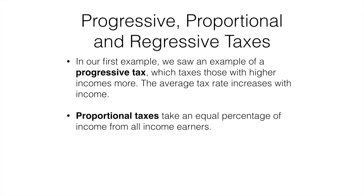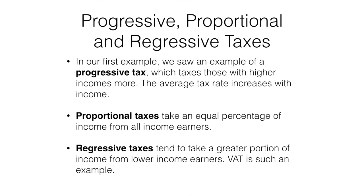Regressive taxes tend to take a greater portion of income from lower income earners. VAT is an example. Consider two people buying $100 worth of clothes and each paying $20 worth of VAT. If I earn $100 and use all my money to buy those clothes, I have paid 20% of my income in tax. However, if I earn $1,000 and use just $100 of my money to buy those clothes, I have paid only 2% of my income in tax.